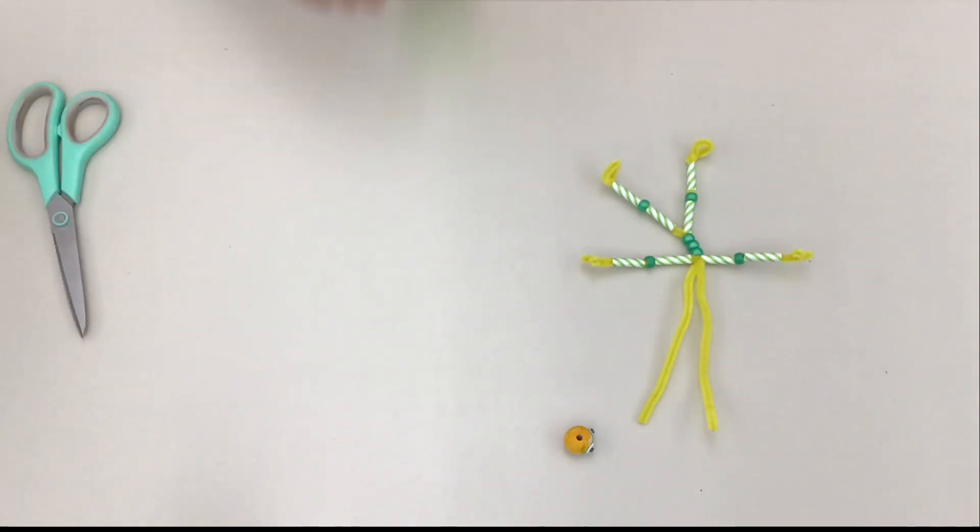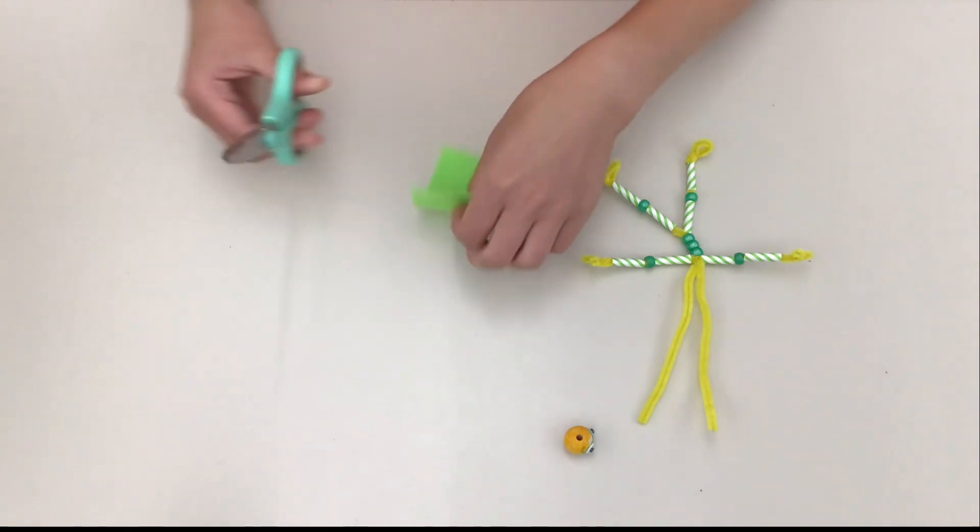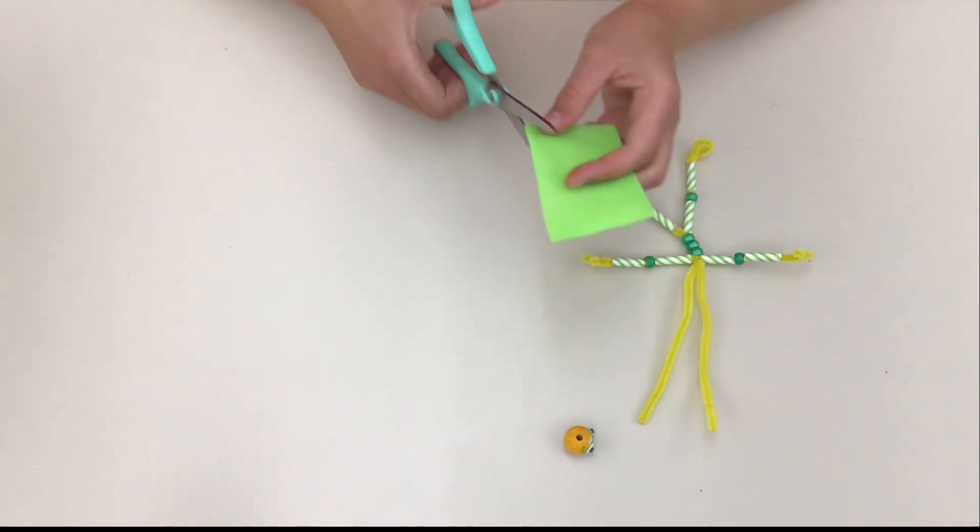While those dry, we can work on the cape. Grab your piece of felt and cut it into whatever shape cape you want. I'm just going to do mine a simple triangle.